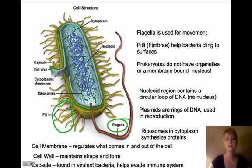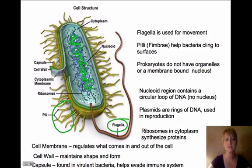What bacteria do have is a nucleoid region, which is just a circular loop of DNA. This squiggly area in here is just DNA — there's no nucleus, it's just in there. There are also plasmids, which are rings of DNA used in reproduction, though this picture doesn't really show any plasmids.